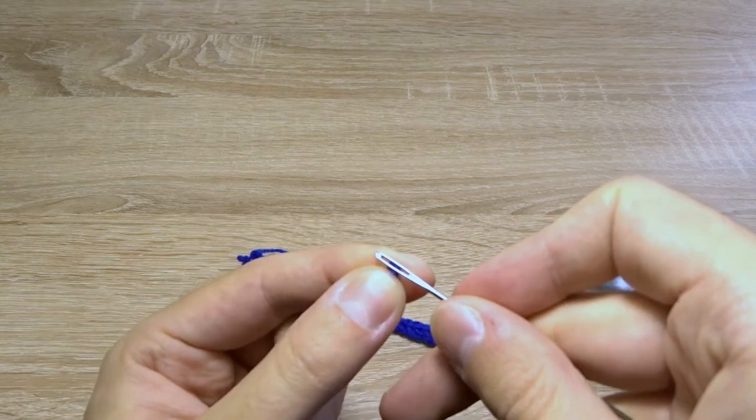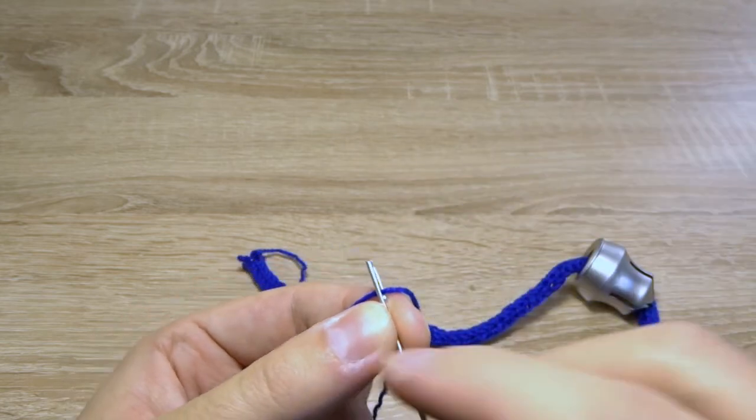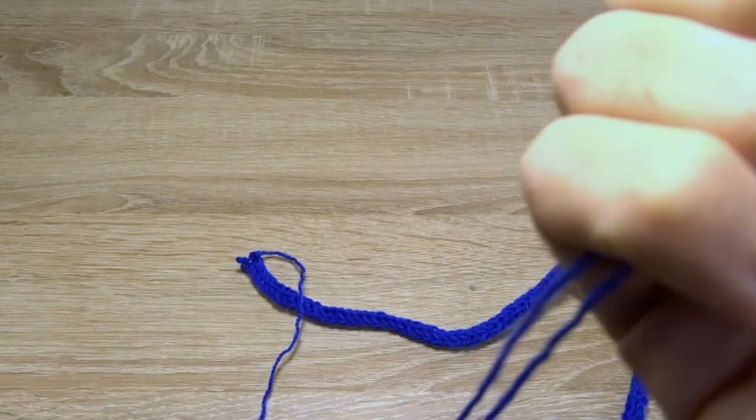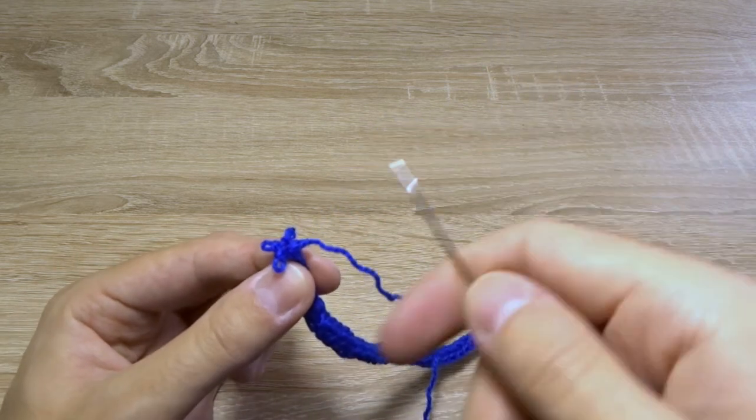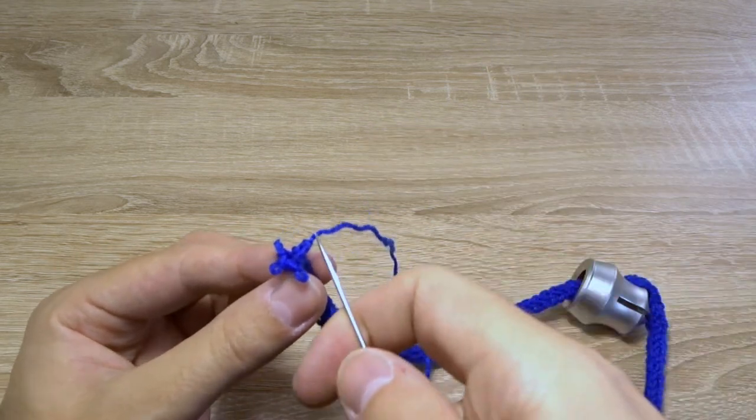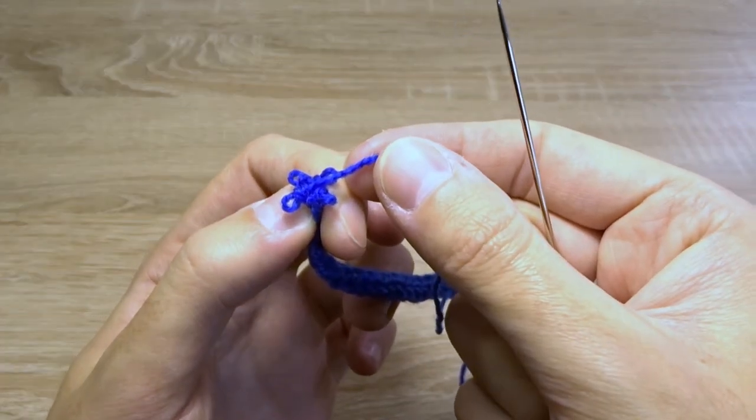Take a tapestry needle and thread it using the end of the yarn. Find the last loop. You need to string the loops in the direction of the yarn tail so the last loop will be the one from which the tail comes out.